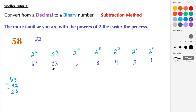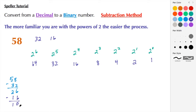Now 26 is the number we're doing our comparison with. 64 is too much, 32 is too much — but 16 is less than or equal to 26, so we're going to use 16. Then we do another subtraction: 26 minus 16 equals 10.